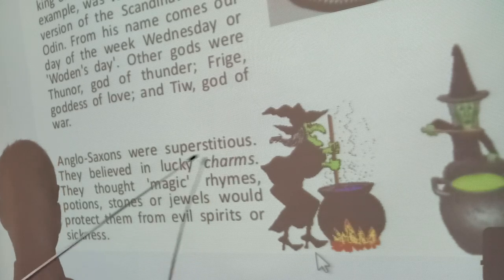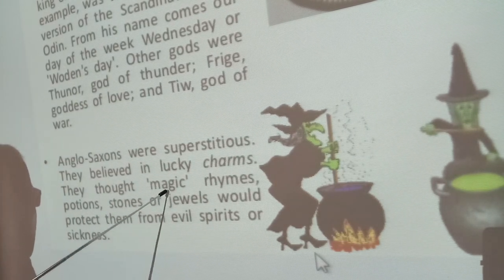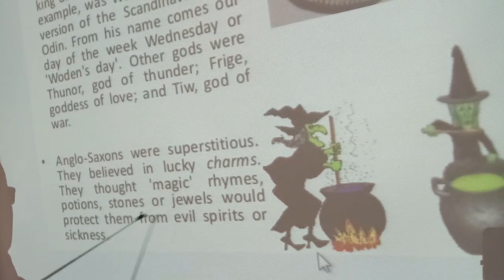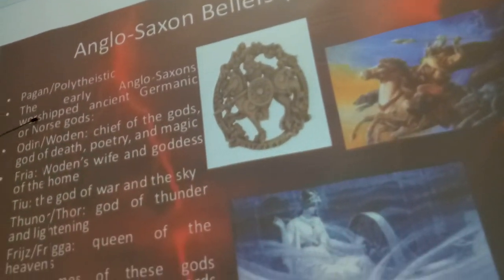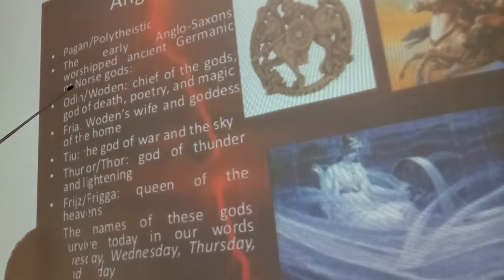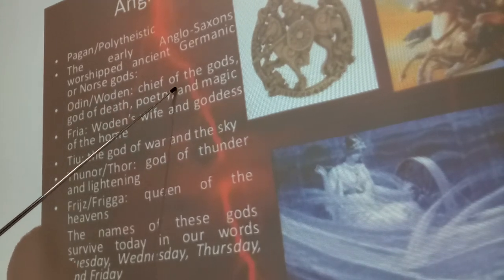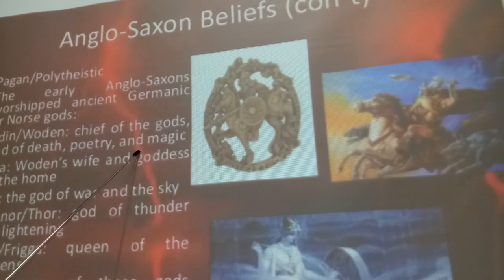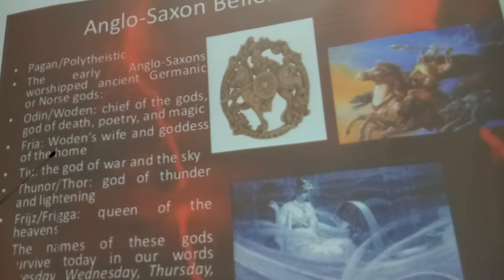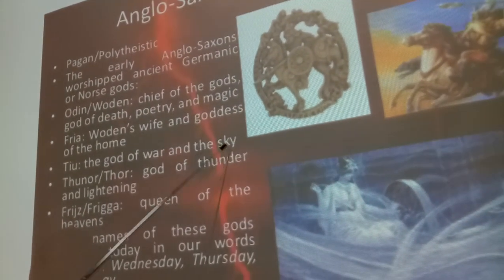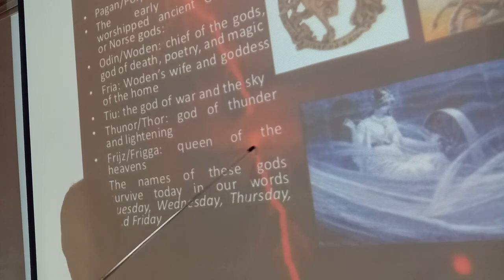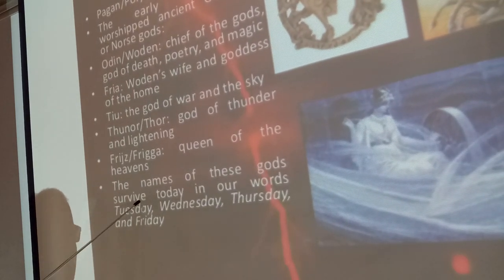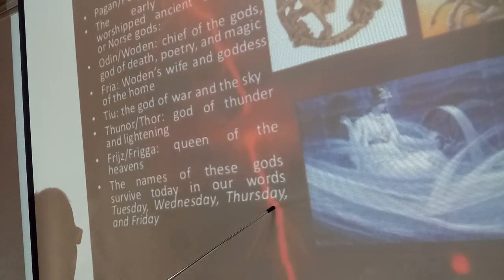Woden was the chief god — god of the dead, poetry, and magic. Freya was the goddess of love. Tui was the god of war. Thor was the god of thunder and lightning. The names of these gods survived today in our words: Tuesday, Wednesday, Thursday, and Friday.